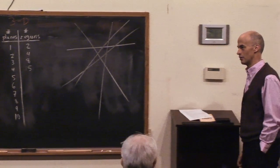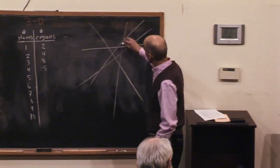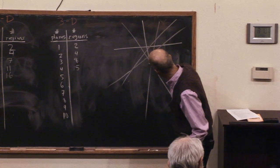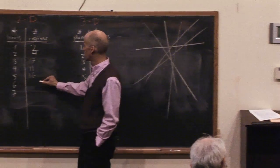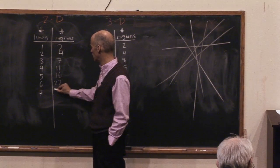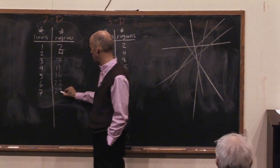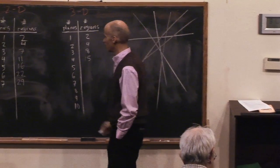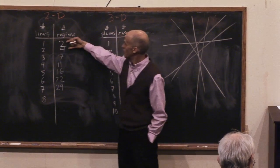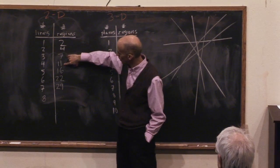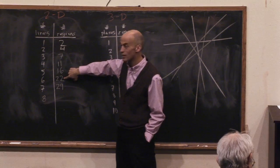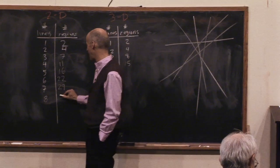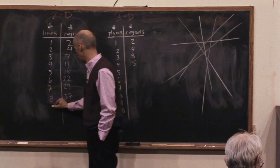Look for patterns. Twenty-two, twenty-nine... Do you see it? Add two, add three, add four — eleven plus five is sixteen, sixteen plus six is twenty-two. I just added six, now I add seven, now I add eight, now I add nine.